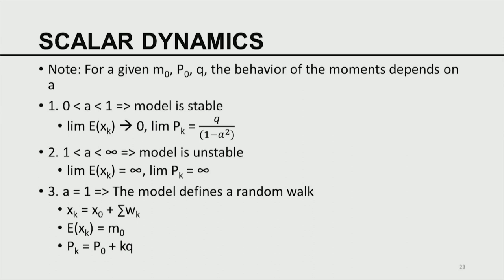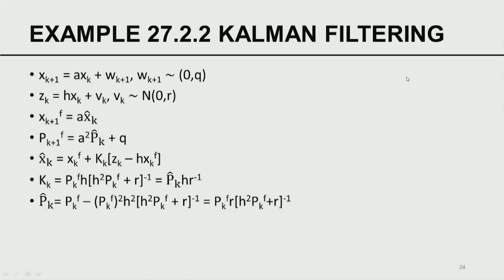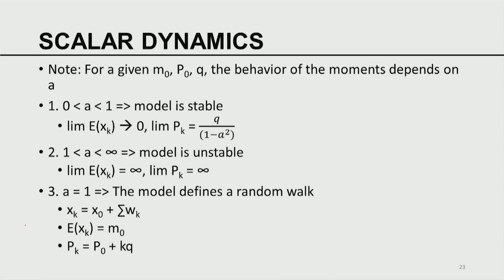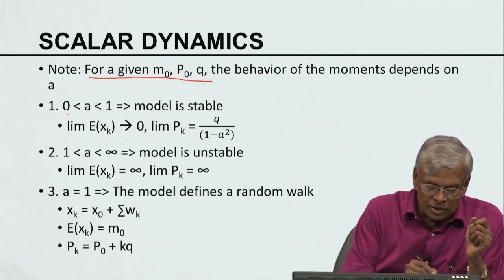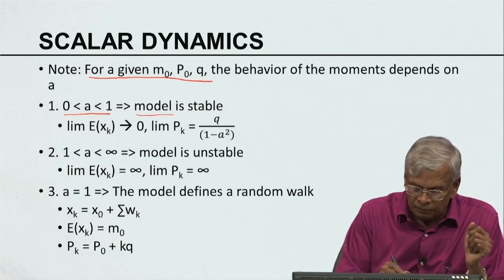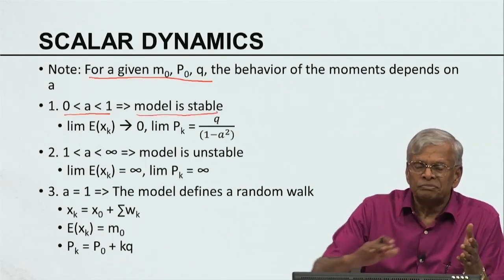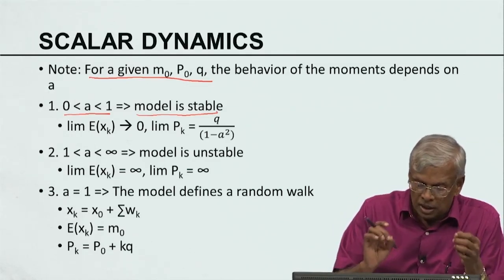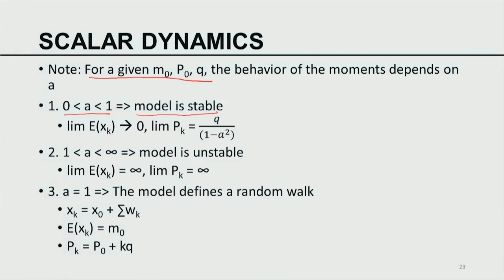For a given M naught, P naught, and Q — where M naught is the mean of the initial condition, P naught is the covariance of the initial condition, and Q is the variance of the model noise — I would like to be able to analyze the behavior of all the moments: the first moment and the second moment of the forecast. That simply depends on A, because all the other factors are fixed. For a given M naught, P naught, and Q, the behavior of the forecast moments depends only on A. When A is in the region greater than 0 and less than or equal to 1, the model is stable — meaning the model solution does not explode to infinity.